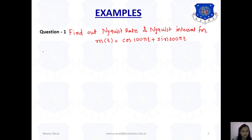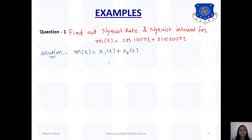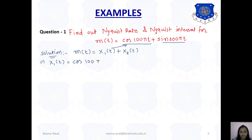For the solution, we will compare the given data with the standard equation m(t) = x1(t) + x2(t). We have taken two signals because in the data we have two terms. So comparing, x1(t) = cos(100πt) and x2(t) = sin(200πt).